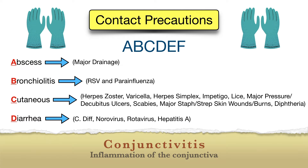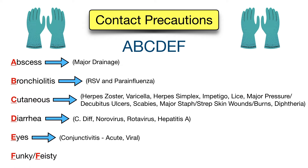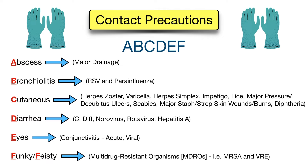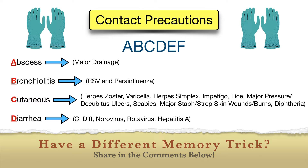Remember conjunctivitis simply means inflammation of the conjunctiva. Many things can cause it — allergies, irritants, trauma, viral infections, and bacterial infections — but not all require contact precautions. We're mainly talking about the infectious forms, particularly viral, commonly caused by adenovirus. Finally, F stands for funky or feisty, to help you remember multidrug-resistant organisms such as MRSA and VRE. These can be challenging to treat, and contact precautions should be used to prevent transmission. So for contact precautions, just remember ABCDEF.